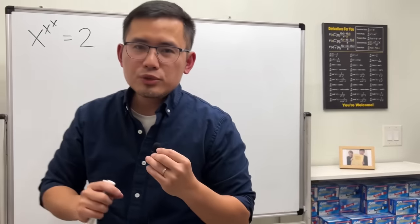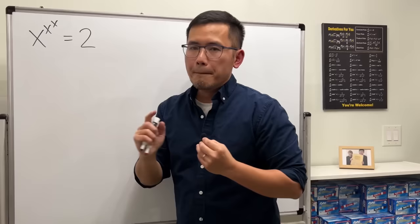So I've been trying to solve the tetration equation, x to the x to the x power equals 2, by using the Lambert W function. But I really don't think it's possible.